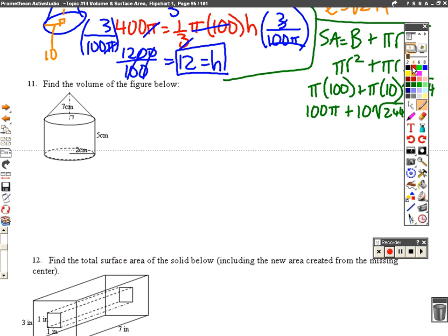So to find the volume, the total volume, it's going to equal the volume of the cylinder plus the volume of the cone. Okay, so let's work on each one separately. The volume of the cylinder is 1 third big B times H and since the base is a circle, it's 1 third pi R squared times H.